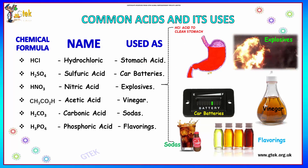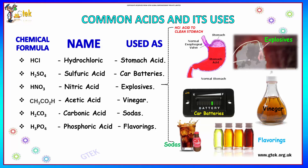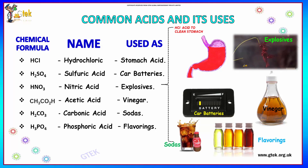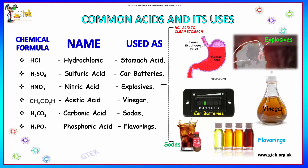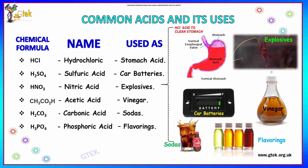Sulfuric acid is used for carburetors. Nitric acid is used for explosives. Acetic acid is used for preparing vinegar in food products. Carbonic acid is used for sodas, and phosphoric acid is used for flavorings.